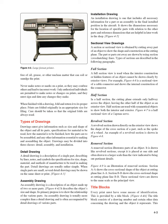A sectional view is obtained by cutting away part of an object to show the shape and construction at the cutting plane. The cut-away parts are shown using section cross-hatching lines. A full section view is used when the interior construction or hidden features of an object cannot be shown clearly by exterior views. A half section has the cutting plane extending only halfway across the object, leaving the other half as an exterior view. Half sections are used with symmetrical objects to show both interior and exterior, as in a half sectional view of a capstan servo.